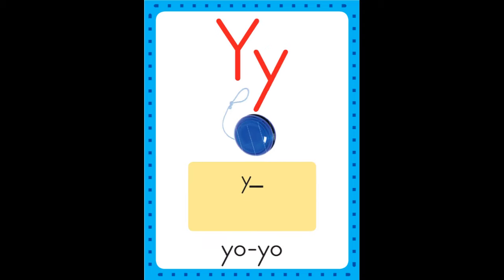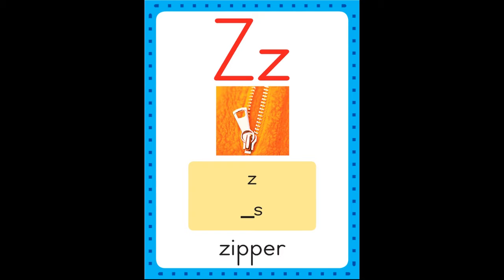Y is for yo-yo, y-y-yo-yo. Z is for zipper, z-z-zipper. Thank you.